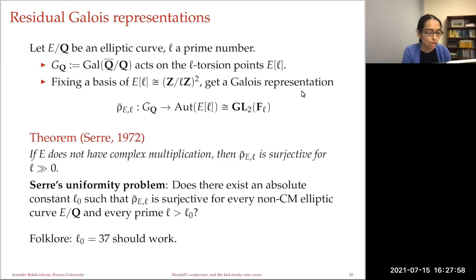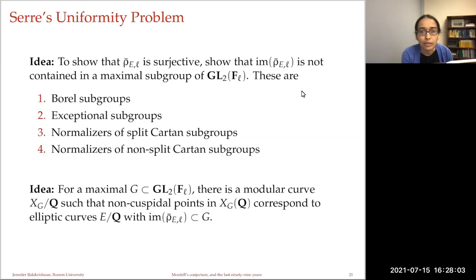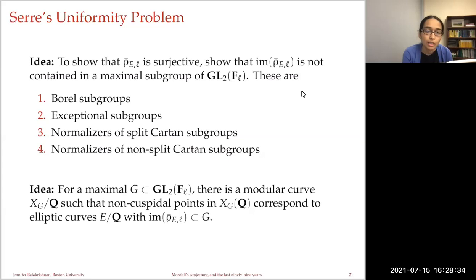To show that rho-bar_{E,l} is surjective, one wants to show its image is not contained in any maximal subgroup of GL₂(F_l). The classification of maximal subgroups includes: Borel subgroups (upper triangular), exceptional subgroups (projective image A₄, S₄, or A₅), normalizers of split Cartan subgroups, and normalizers of non-split Cartan subgroups. For each maximal subgroup G there is a corresponding modular curve over Q whose non-cuspidal rational points correspond to elliptic curves over Q with Galois image contained in G.